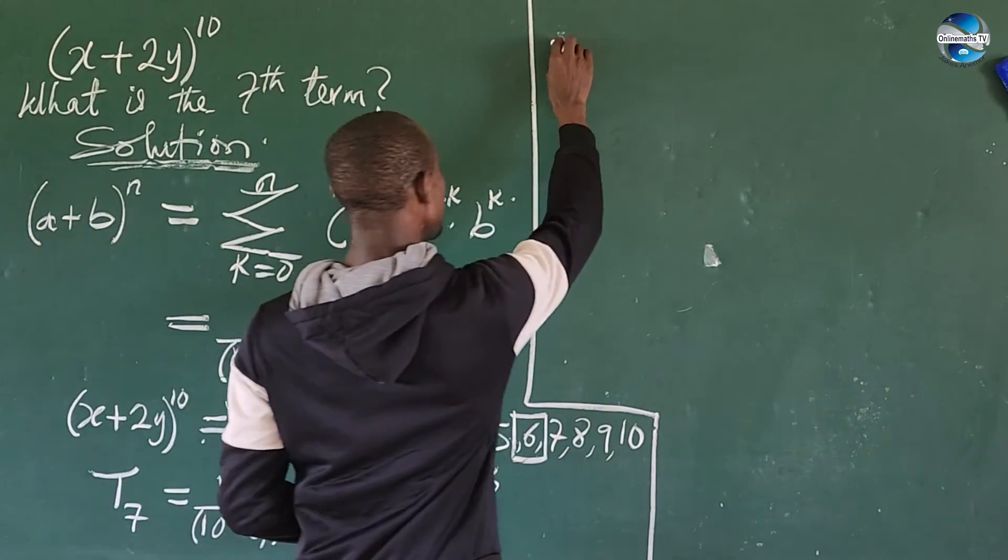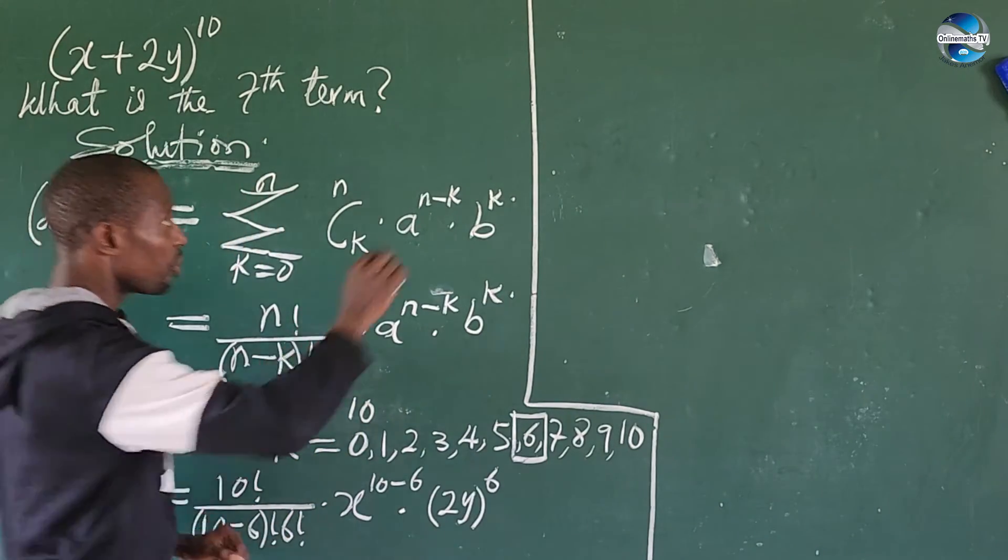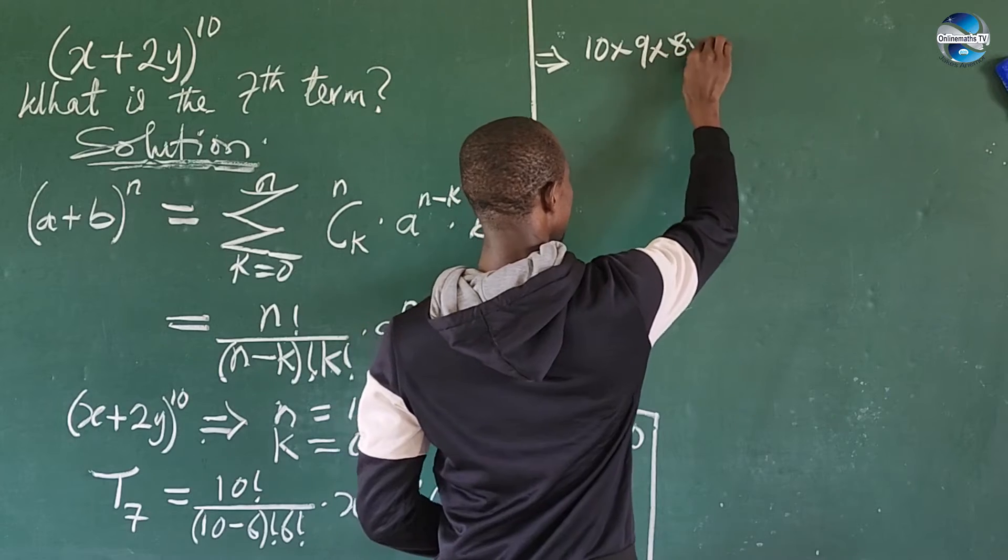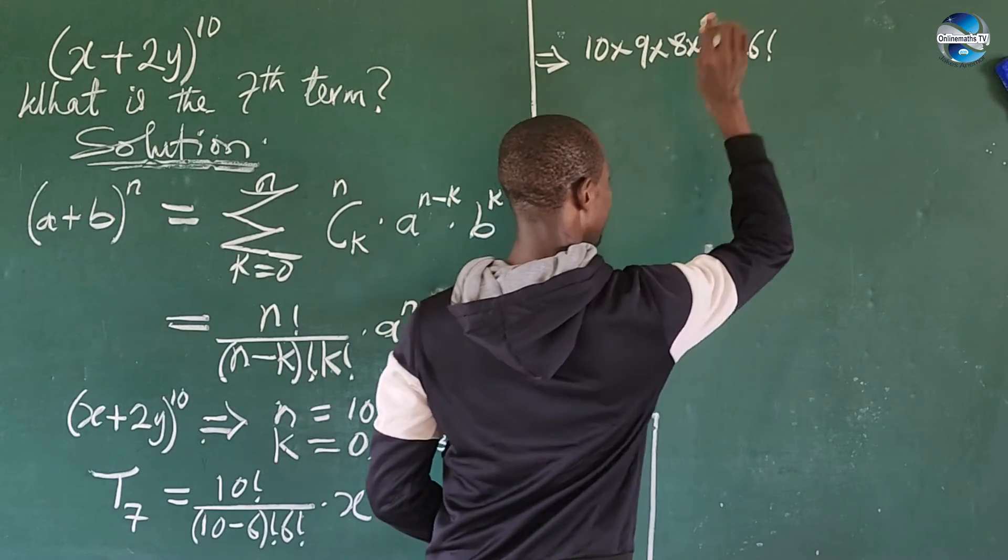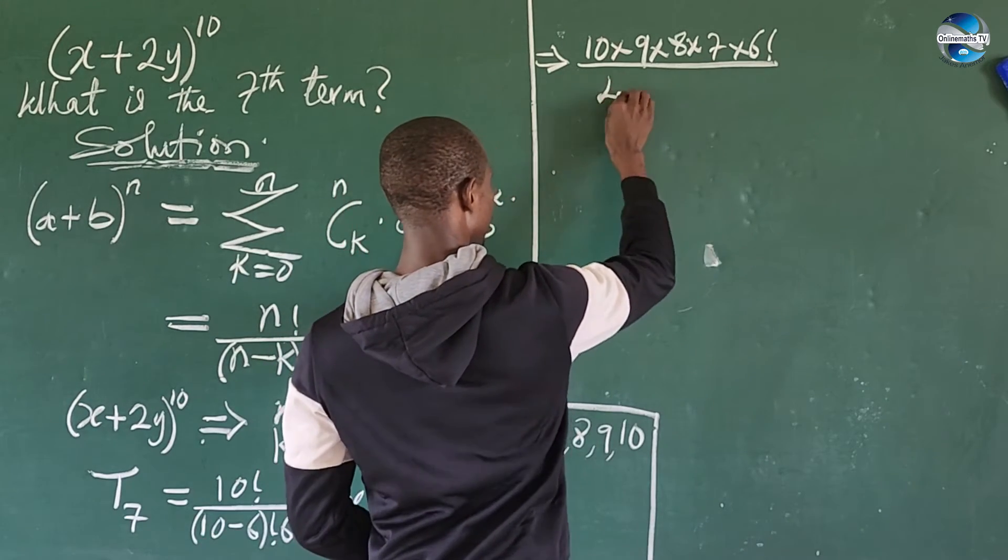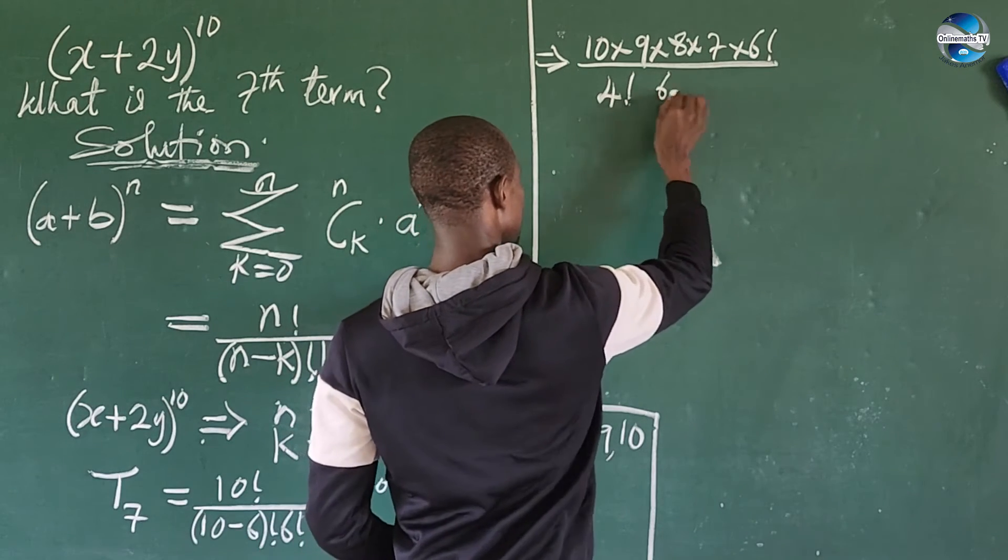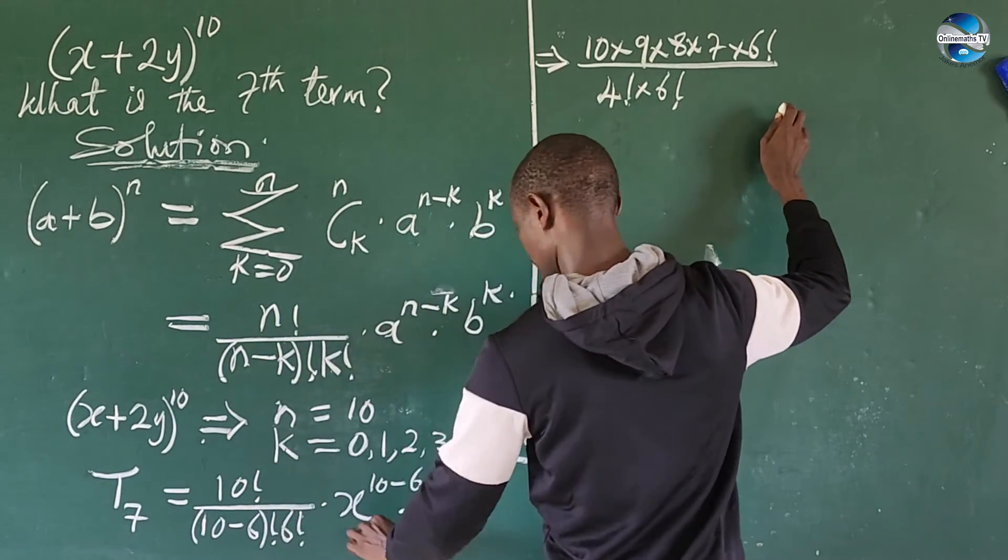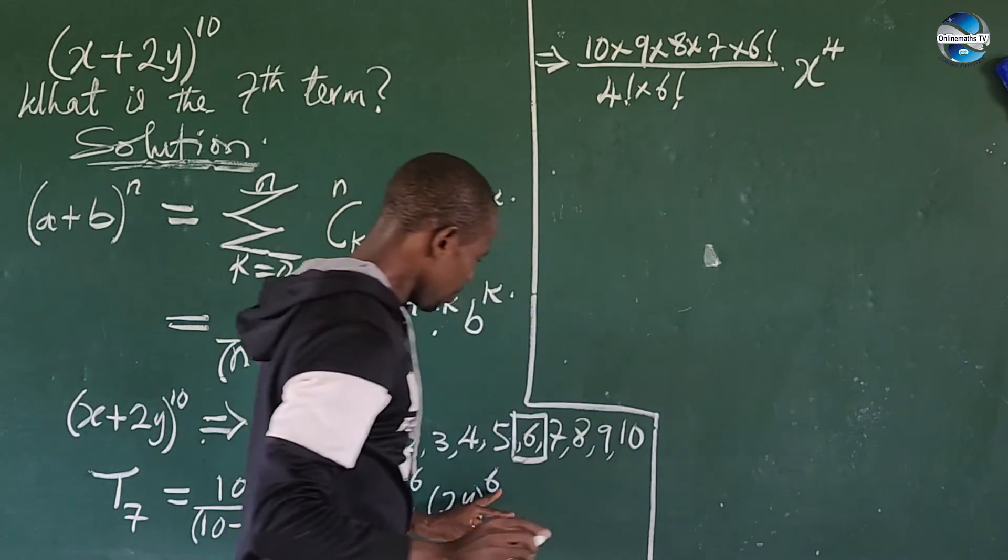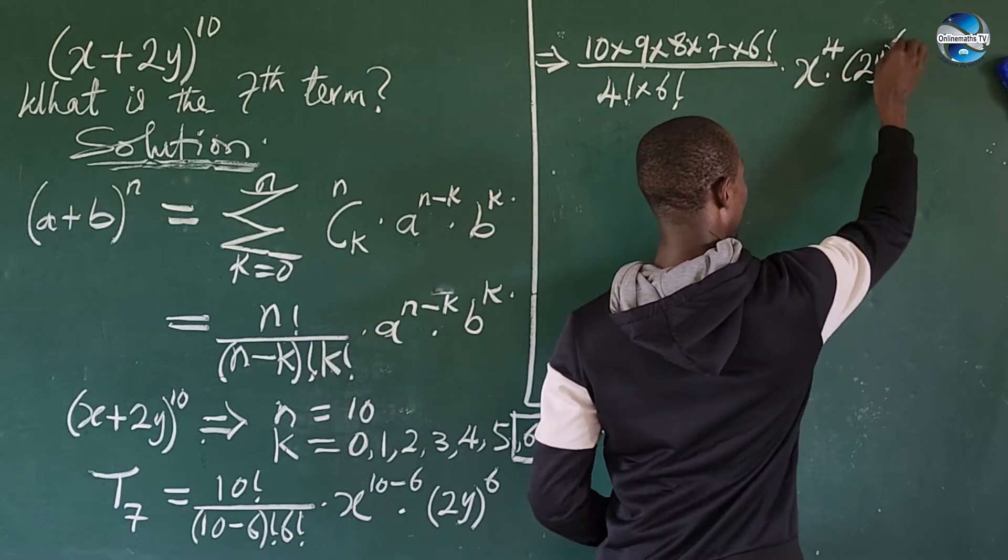So we're going to have this to be your 10. So let's just bring out our 10 factorial. But our 10 factorial, we're going to end it at 6. So we're going to have this to be 10 times 9 times 8 times 7 times 6 factorial, all over, 6 from 10 will give us 4 factorial, times 6 factorial. Everything into times x to the power of 4. And we use this to open up this, but let's keep this first. So we have here times (2y)^6.